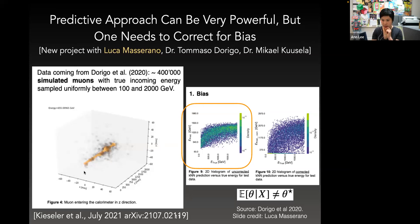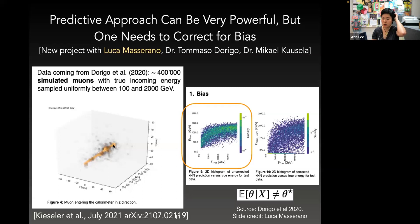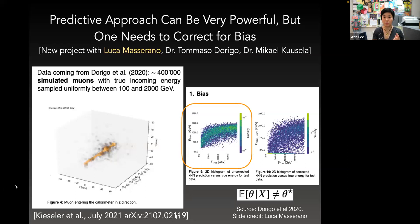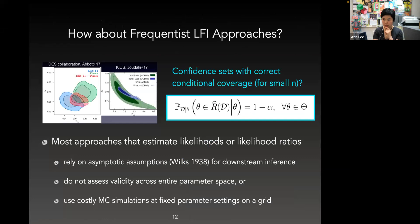The data here is the energy deposited as the muon enters the calorimeter. The Rigo group has realistic forward simulations of the energy deposits — our data X — given different values of the true muon energy theta, which we want to infer. In this case, we only have one observation, so n is one, and the data is very high dimensional. For the full dataset, our energy measurements are in 30 by 30 cells in each layer, with 50 layers in depth — about dimension 50,000 different cells.